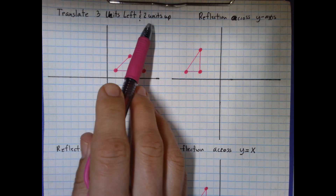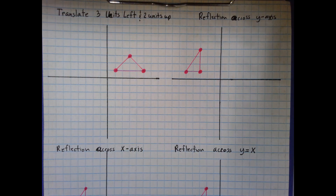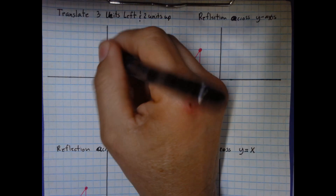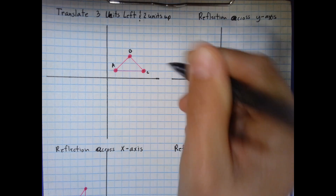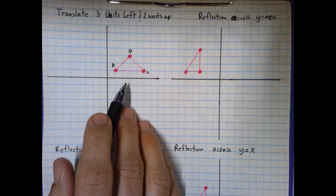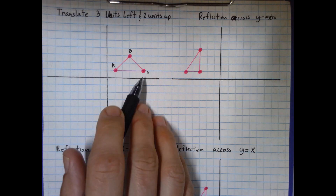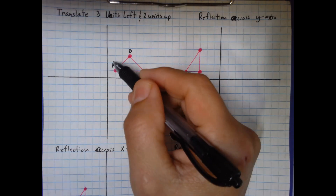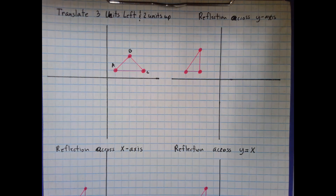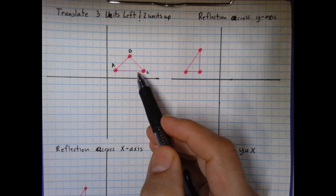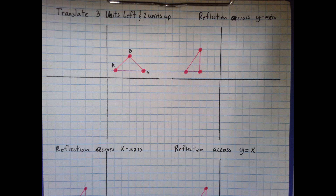The first problem says to translate three units left and two units up. I'm going to label the vertices A, B, and C. When I move each point, the new point is called A prime, B prime, and C prime — the prime mark looks like an apostrophe after each letter. That shows it's the new image that's been moved. This original shape is called the pre-image, and the new one is the image.